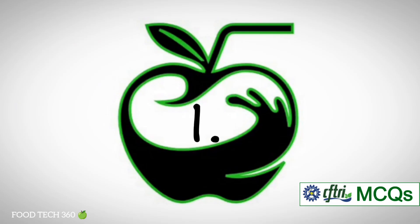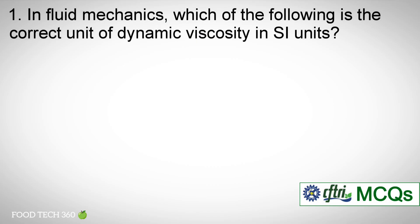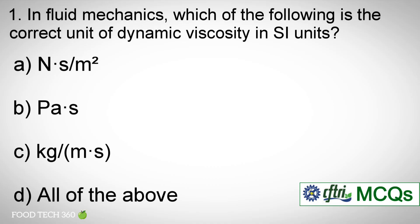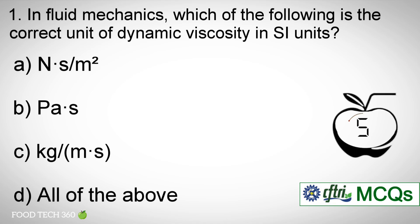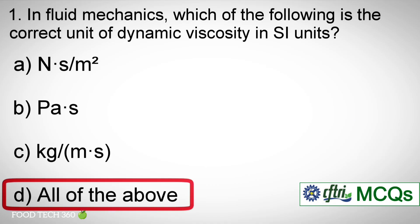Question number 1: In fluid mechanics, which of the following is the correct unit of dynamic viscosity in SI units? A. Newton seconds per meter square. B. Pascal seconds. C. Kilograms per meter seconds. D. All of the above. Correct answer: D — All of the above.